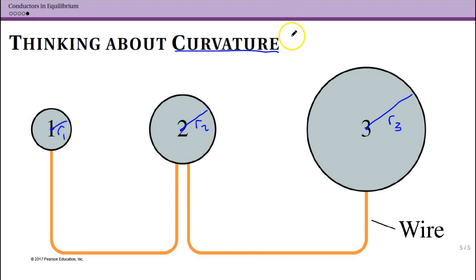So the first question, well there's two questions here. One is how do the potentials outside these compare? And then the second is how do the strengths of the electric fields outside these compare?